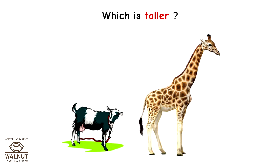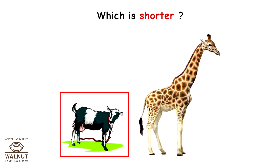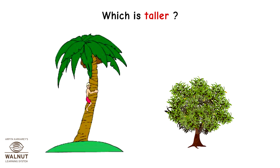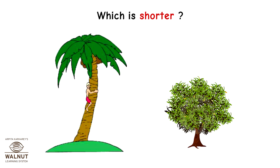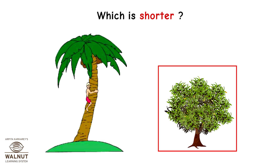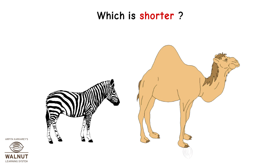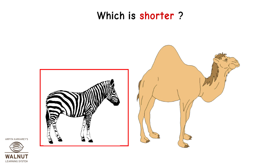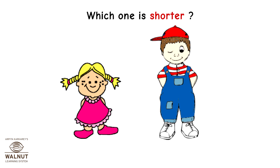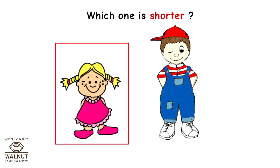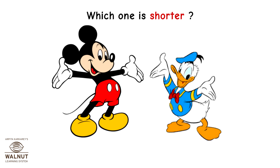Which is taller? This one. Which is shorter? This one. Which is taller? That's correct. And which is shorter? Which one is taller? That's correct. And which one is shorter? Good job. Which one is taller? This one. Which one is shorter? This one.